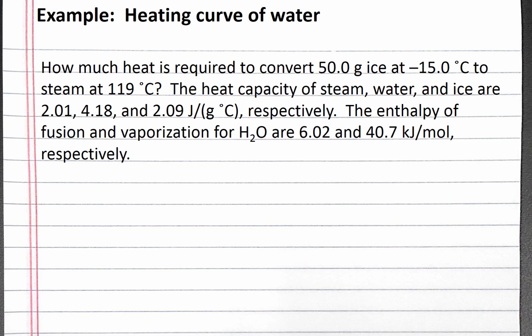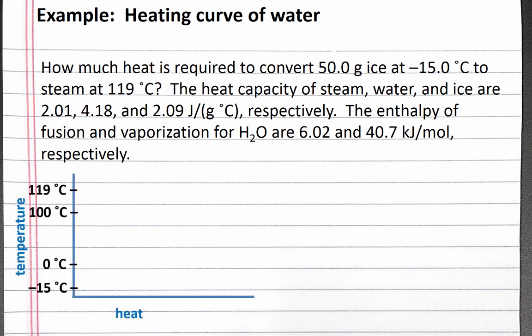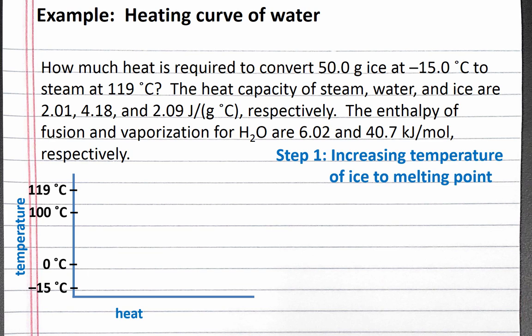We can start by drawing the heating curve of H₂O. We're starting with ice at negative 15 degrees Celsius. Our first step is to increase the temperature of the ice to the melting point of ice, which is 0 degrees Celsius. As we add heat, the temperature of the ice increases according to its heat capacity. Once we reach our melting point, adding thermal energy no longer increases the temperature of the ice. Instead, the thermal energy goes into melting the ice by overcoming the intermolecular forces keeping the molecules in the crystal lattice of the solid.